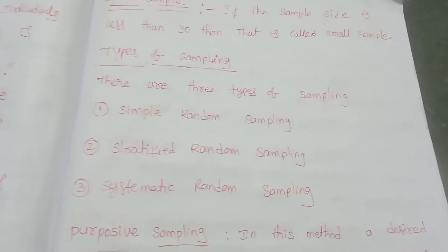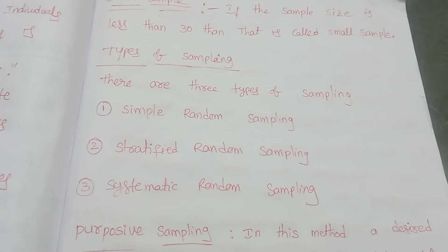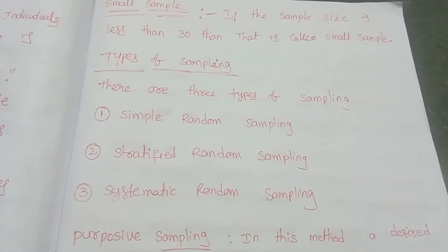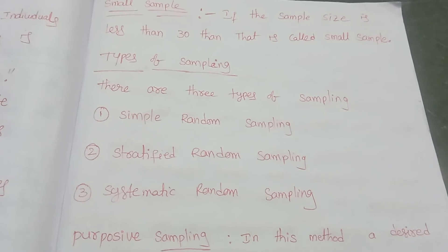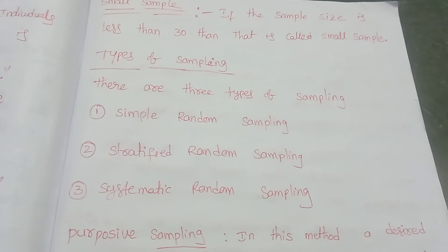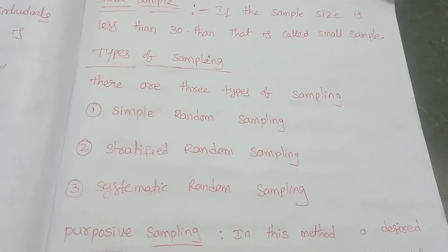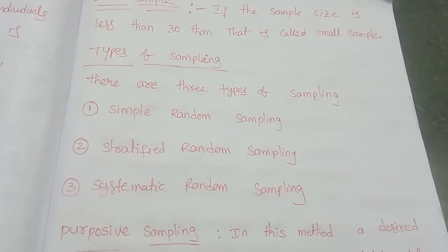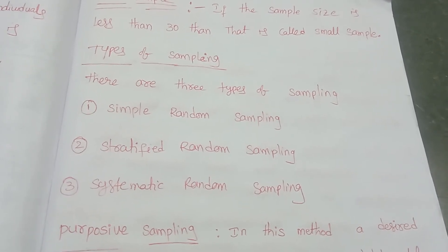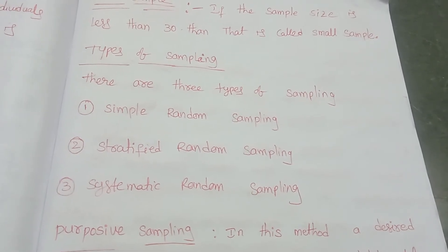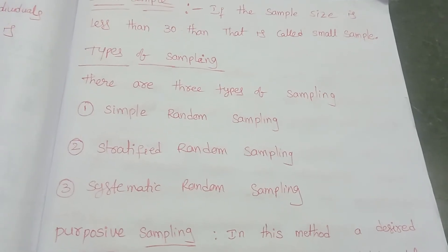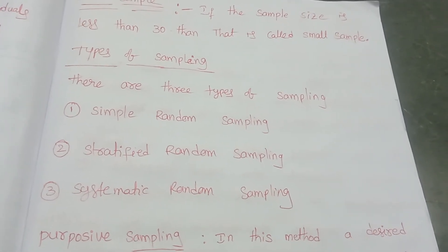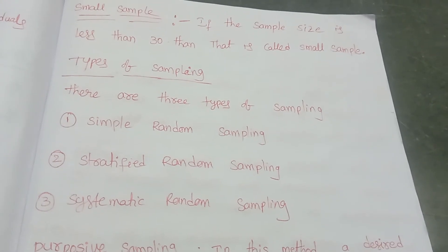Another example: suppose I test your blood group. For that test we take only a small sample of blood. From that small sample we test and give the report — either A group or B group. We get the same result from a small sample. If we used the entire blood in the body, you know what would happen. So we take only a small sample, and sometimes sample gives the same results as the full population, and it takes less time.